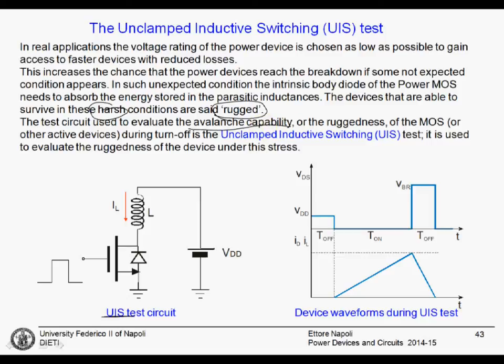The test works as follows: you first switch on the device. The VDS goes to zero, and the device stays on for a quite long time. During this time, the inductor current increases. When you reach a given inductor current — which corresponds to a given energy stored in the inductor — the device is switched off.